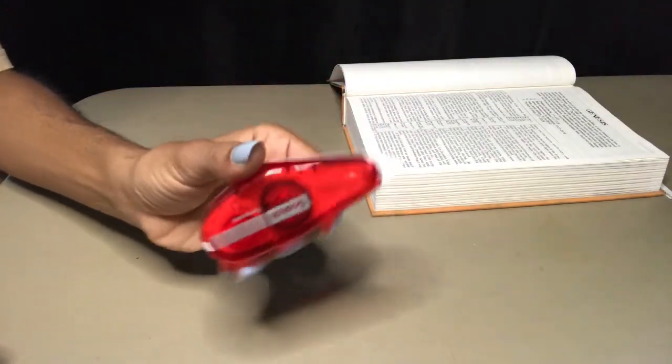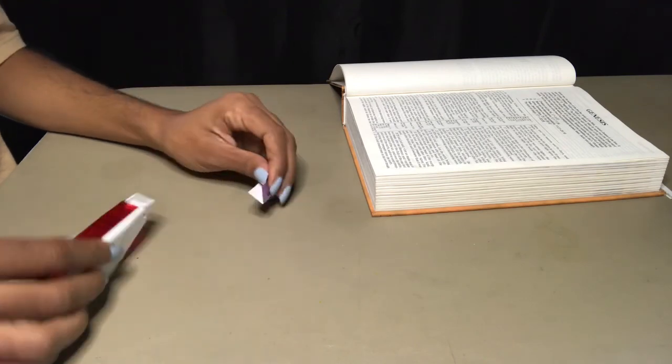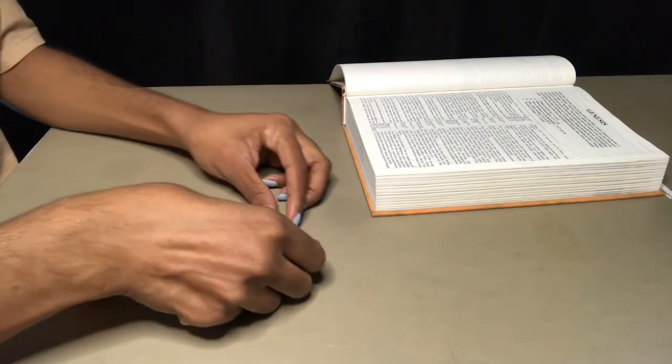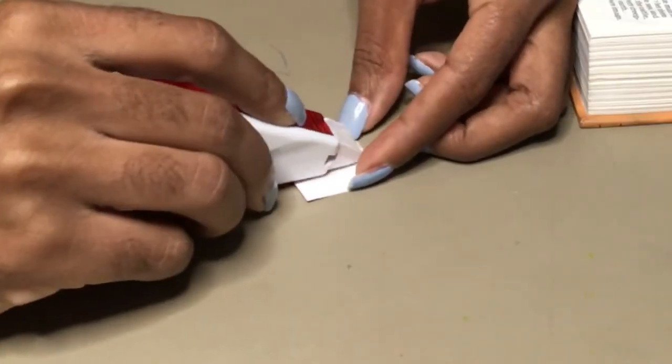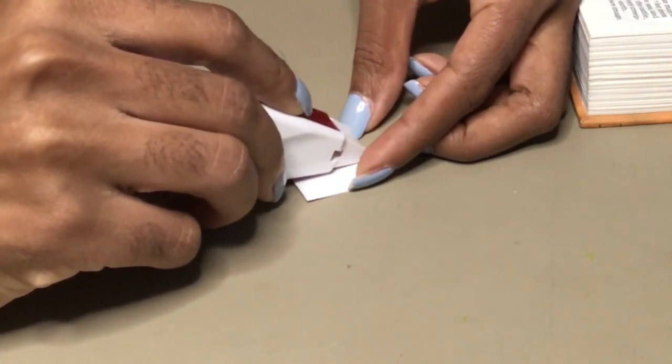Now I'm going to take my double-sided stick roller and open up the tab and roll it on the back of the tab towards the middle.